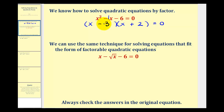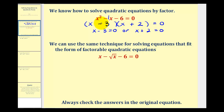This is equal to zero when these factors are equal to zero — either x minus three equals zero or x plus two equals zero. So our solutions are x equals three or x equals negative two.